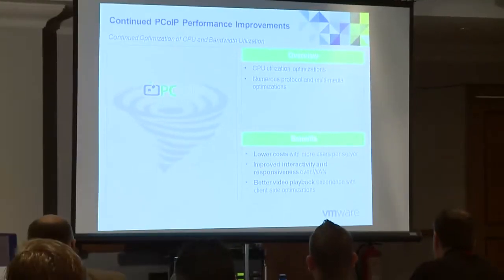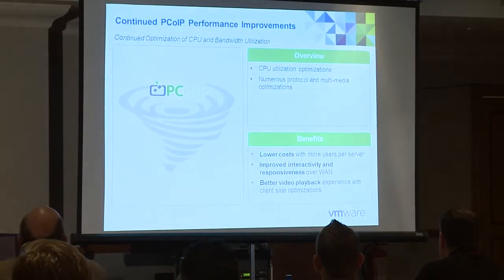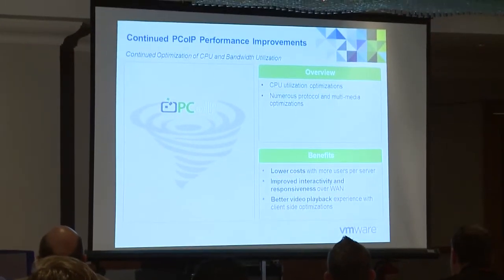We keep on improving PCoIP with every release. In 5.1 we focused on optimizing multimedia and video playback, reducing the CPU demand on those operations. What that means is I can get more users on my ESX server — because if we use less CPU to encode the video stream, we can fit more users on.